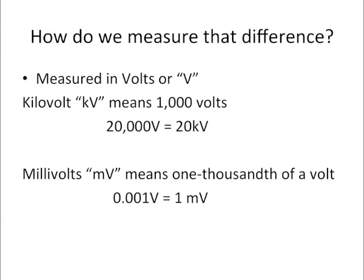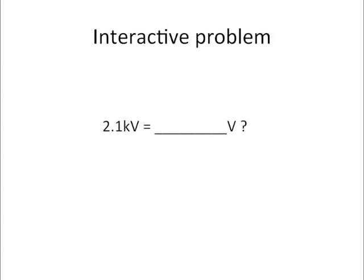So how do we measure the difference? We measure it in volts and we use kilovolts to mean a thousand volts or some very large number of volts like 20,000 volts or 30,000 volts. We also use millivolts to mean one thousandth of a volt. So if we're measuring a really small voltage, then we're going to measure that in millivolts. One kilovolt equals a thousand volts and one millivolt equals one thousandth of a volt. So I have an interactive problem here. What does 2.1 kilovolts equal to in volts? Now remember, each kilovolt is one thousand volts. So we just times 2.1 kilovolts times a thousand, or you could just move the decimal place over three points and you would get 2,100 volts.